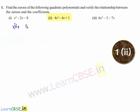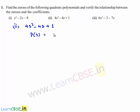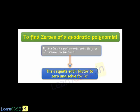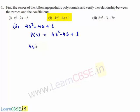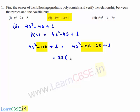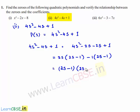Coming to the second part: the polynomial is 4s² minus 4s plus 1. Let p(s) be a polynomial equal to 4s² minus 4s plus 1. To find the zeros, we factorize: 4s² minus 4s plus 1 is written as 4s² minus 2s minus 2s plus 1. This equals 2s(2s minus 1) minus 1(2s minus 1), so taking (2s minus 1) as common, we get (2s minus 1)(2s minus 1).